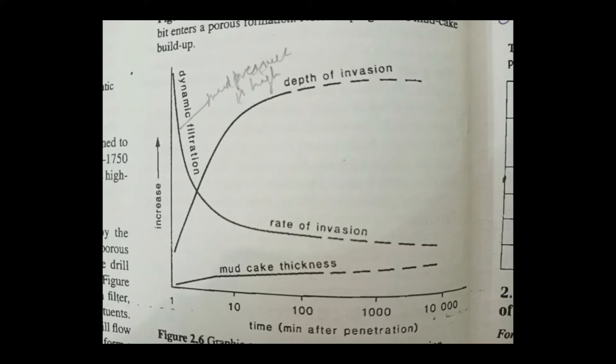Initially, when mud encounters a porous formation, there is complete disequilibrium and dynamic filtration takes place. As soon as the mud cake builds up, it acts as a barrier. Initially filtration is very high, but as time passes there is a buildup of mud cake, and this mud cake further stops the filtration. The mud cake has been built up and it finally stops the filtrate from going into the formation, so the rate of invasion decreases over time.